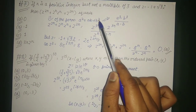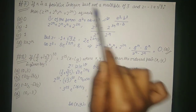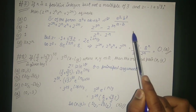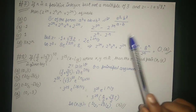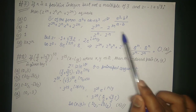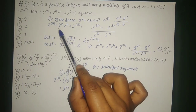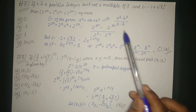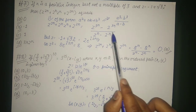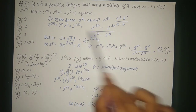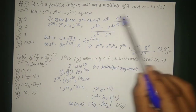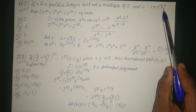Looking at this expression, it is similar to a² + ab + b², which can be derived from (a³ - b³)/(a - b). So we write z^(2n) + 2^n·z^n + 2^(2n) as (z^(3n) - 2^(3n))/(z^n - 2^n). We are given z = -1 + √3·i.